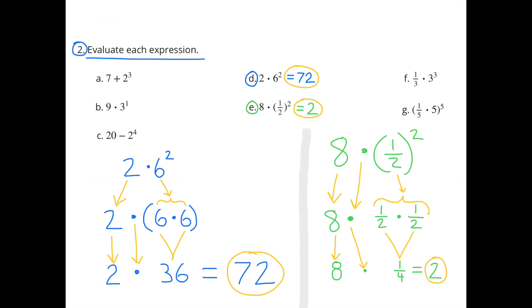D, 2 times 6 to the second power. That's the same as 2 times 6 times 6. 6 times 6 is 36. So 2 times 36 equals 72.